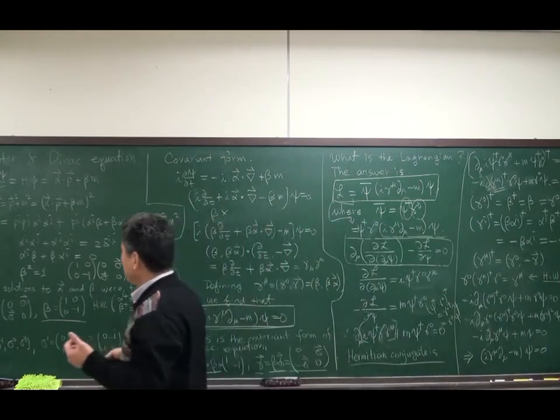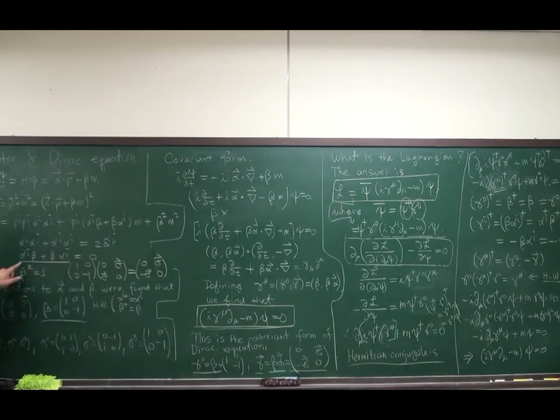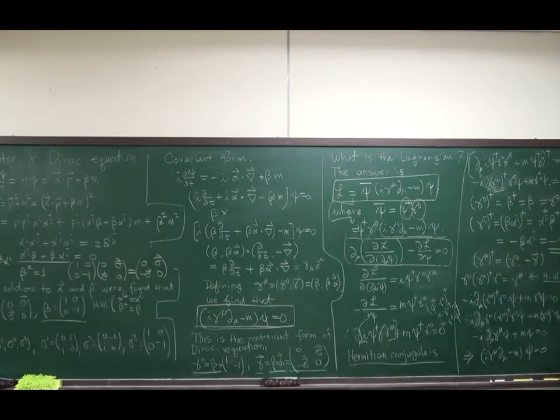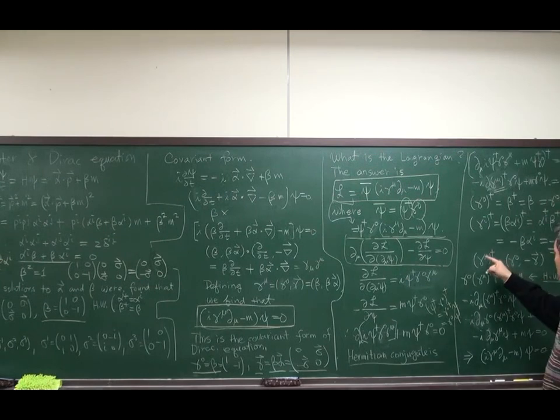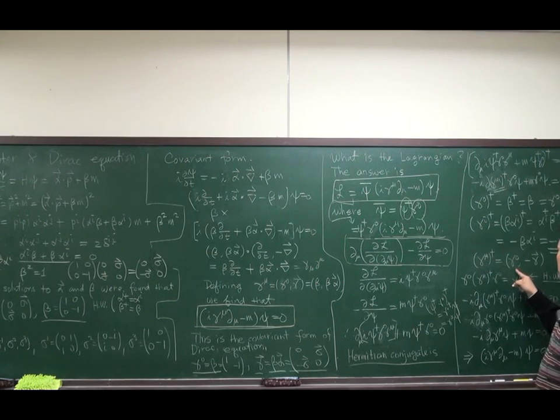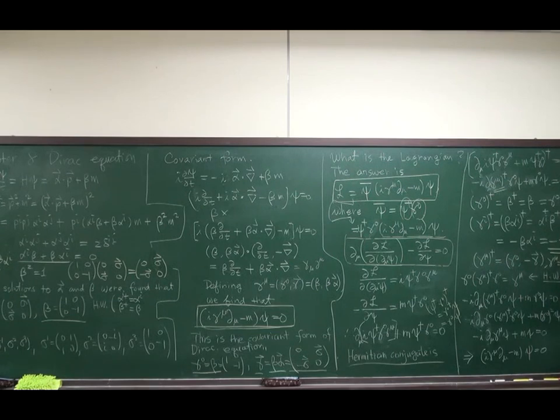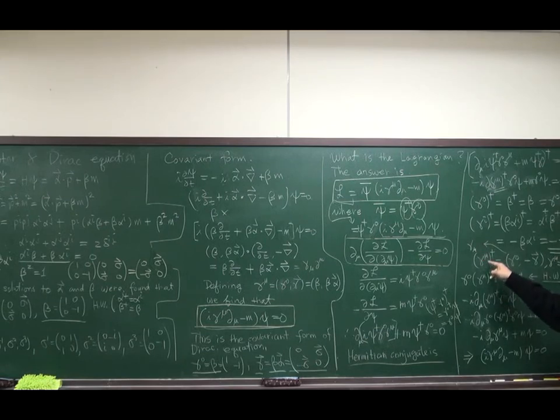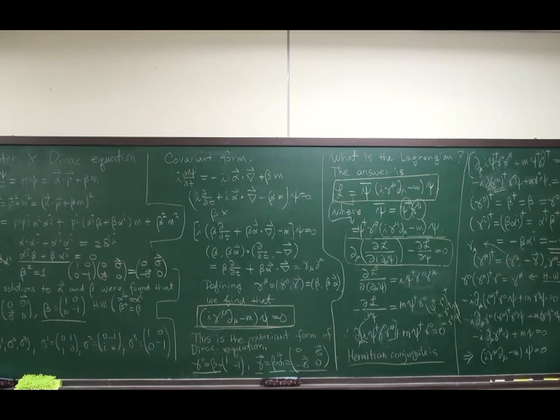But, I have anti-commutation relation. Alpha i beta is minus beta alpha i. Right? So, I have negative sign. Beta alpha i is gamma i. So, gamma mu dagger is like that. Where gamma mu equals gamma 0 gamma. So, contravariant becomes covariant.